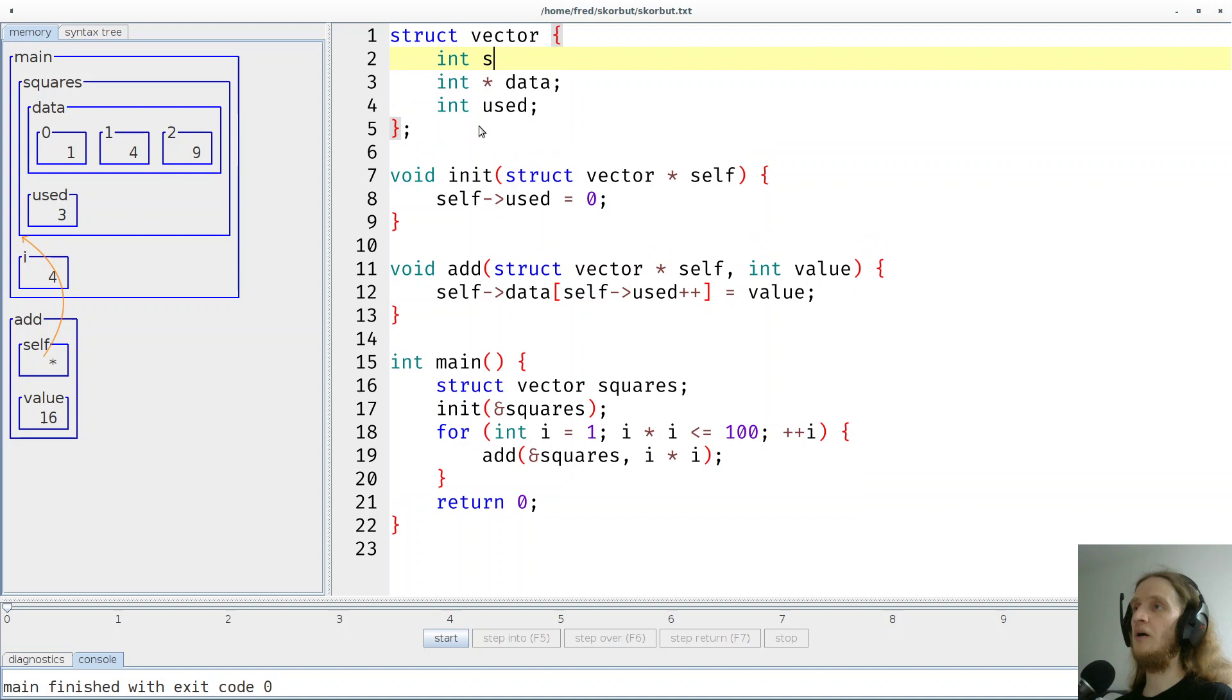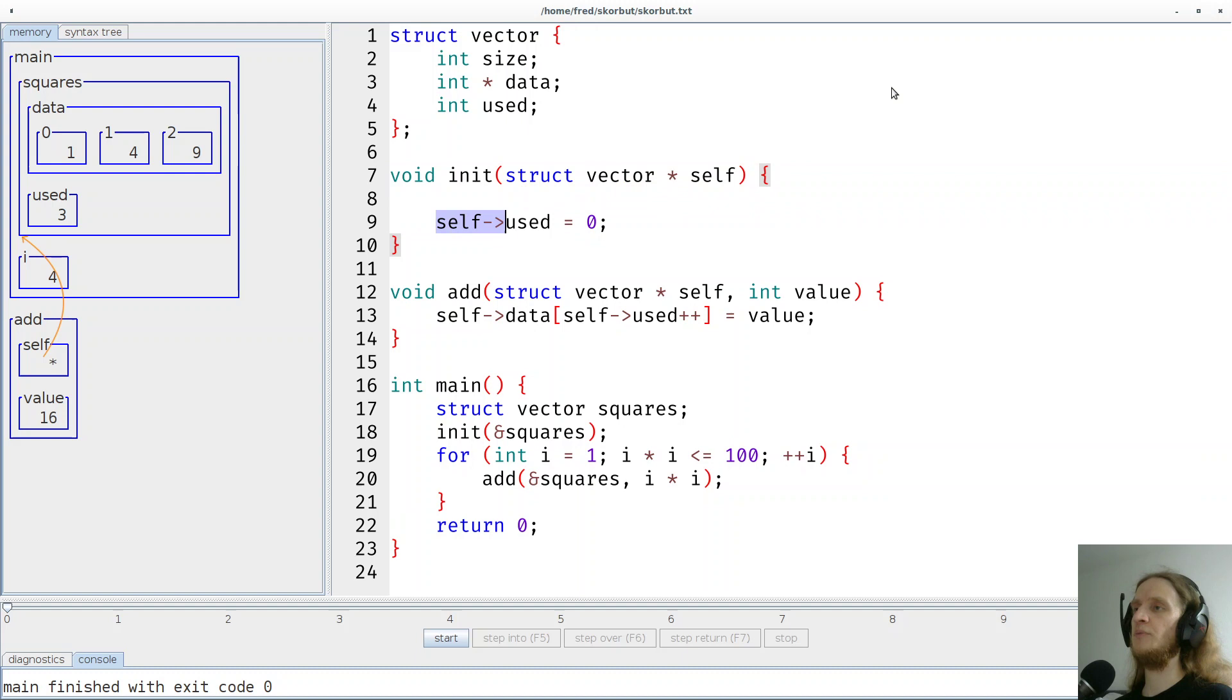So how will we do this? Let me show you. So first, we initialize the size to three, just as before. And then we have to allocate from the heap, memory from the heap, how much do we need? We need the size multiplied by sizeof the element type. So in our case, that would be three times four, 12 bytes.